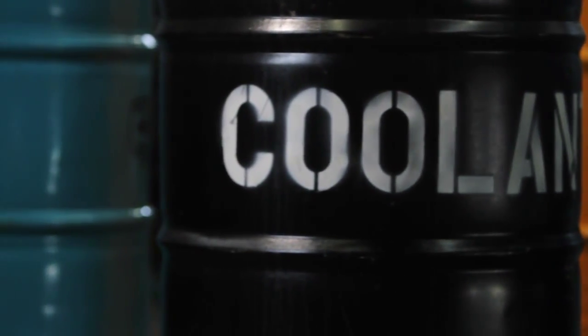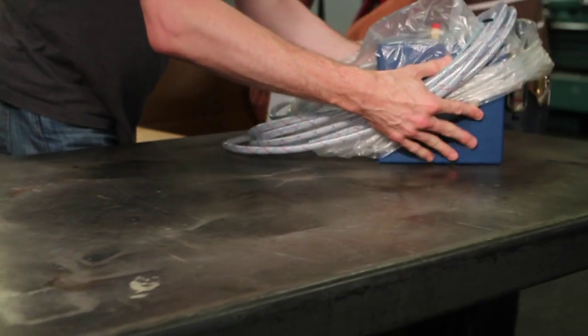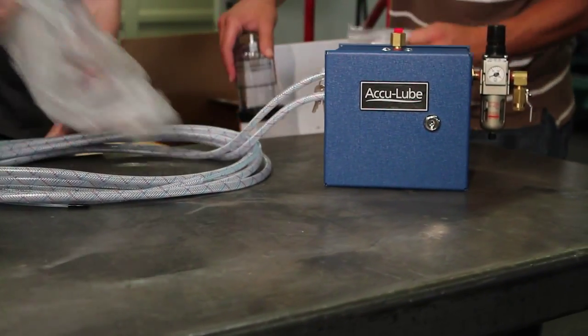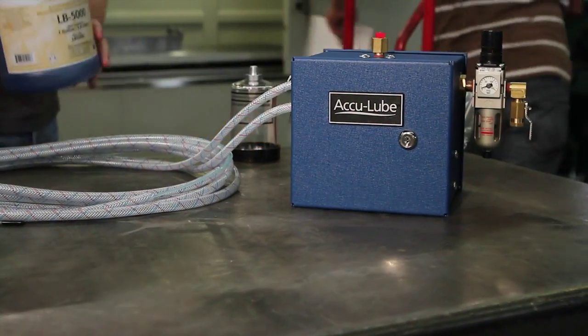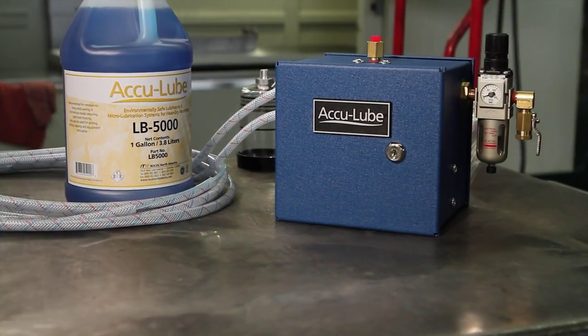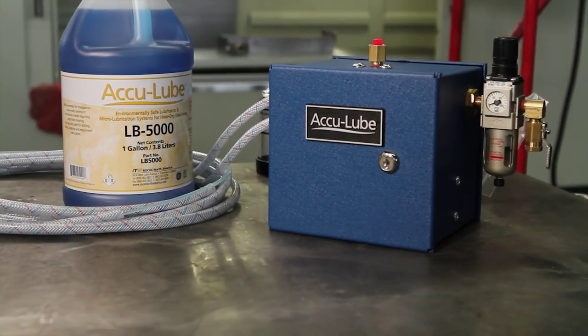With performance superior to flood coolant in most applications, AccuLube is a minimum quantity lubrication or MQL system that consists of an applicator and lubricants for near-dry machining.